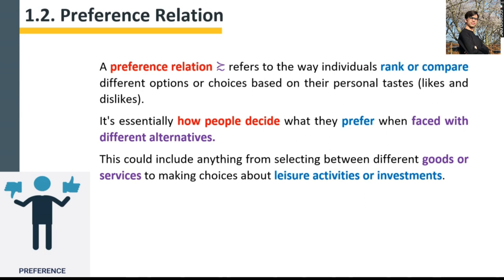This could include anything from selecting between different goods and services to making choices between different leisure activities or investments. As an example of goods, I already provided the example of consuming apples versus oranges.